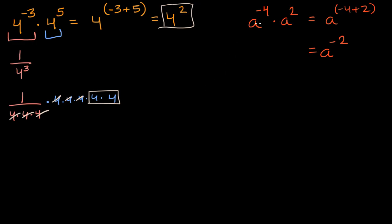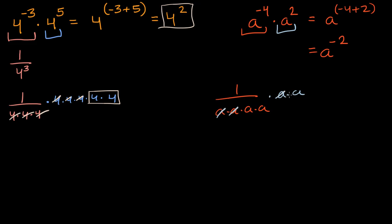And once again, it should make sense. This right over here is one over a times a times a times a, and then this is times a times a. So that cancels with that, that cancels with that, and you're still left with one over a times a, which is the same thing as a to the negative two power.